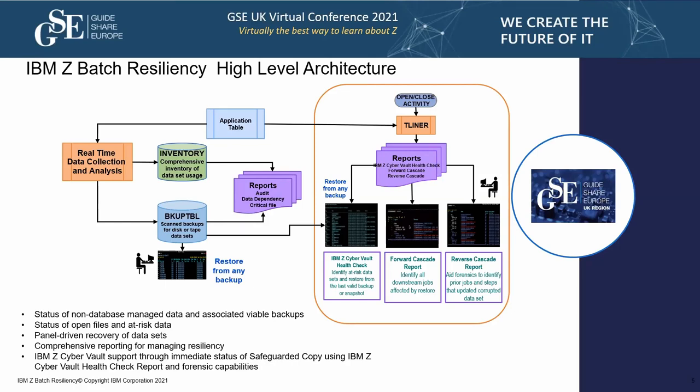We have a forward and a reverse cascade report. The forward shows which datasets were affected downstream from the original job, and the reverse cascade goes backwards in time. Especially when talking about a CyberVault solution, this allows us to determine things needed for forensic analysis — what led to a particular situation happening in the first place.